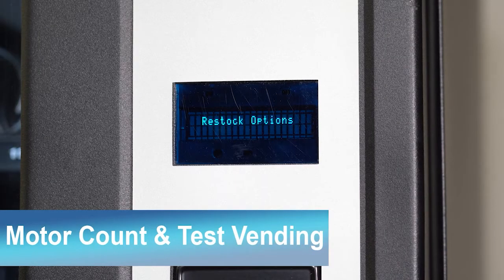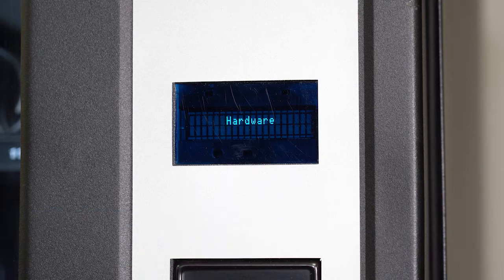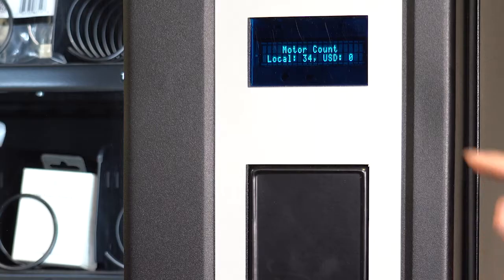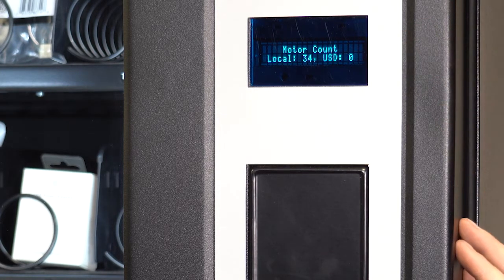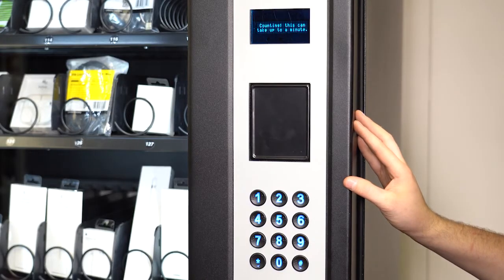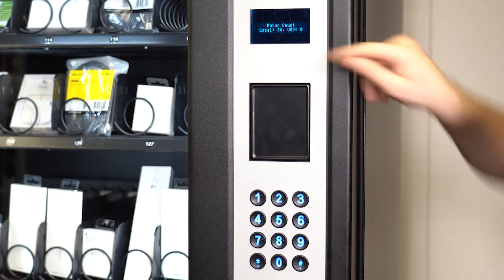After scrolling to the hardware option by pressing star, press zero and you can see the current motor count. Always do a motor count when you receive the machine and after making any changes to the configuration. Press zero to perform the motor count. The machine will count how many active motor signals it has received.